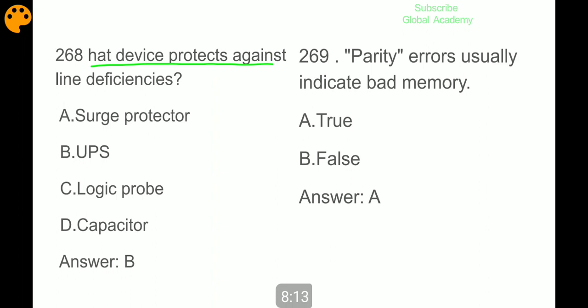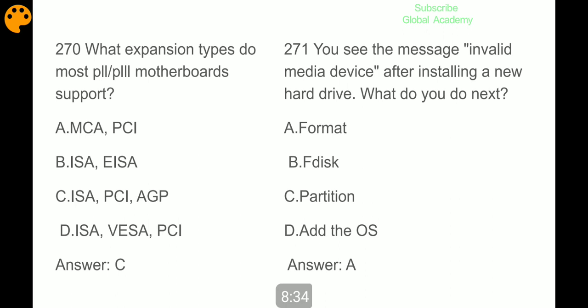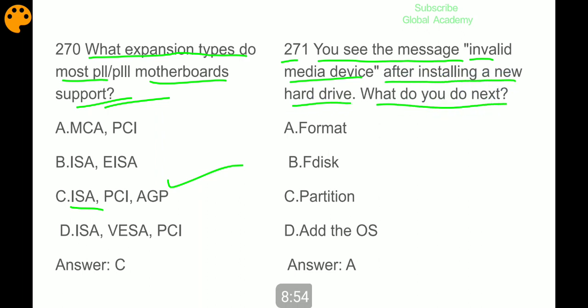What device protects against line deficiencies? UPS. Parity errors usually indicate bad memory. It is a correct option. What expansion types do most PCI motherboards support? ISA, PCI, AGP. You see the message invalid media service after installing a new hard drive, what do you do next? Format.